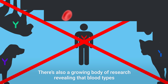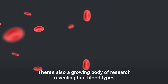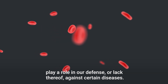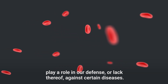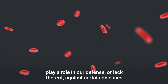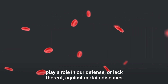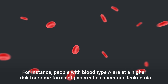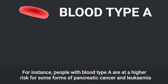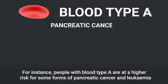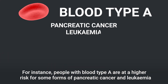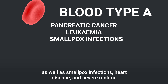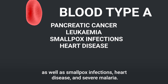There's also a growing body of research revealing that blood types play a role in our defense, or lack thereof, against certain diseases. For instance, people with blood type A are at a higher risk for some forms of pancreatic cancer and leukemia, as well as smallpox infections.